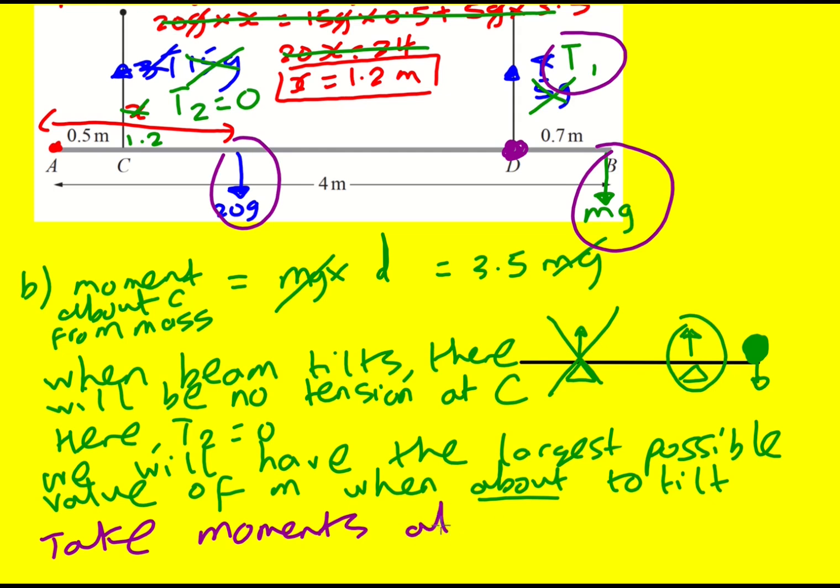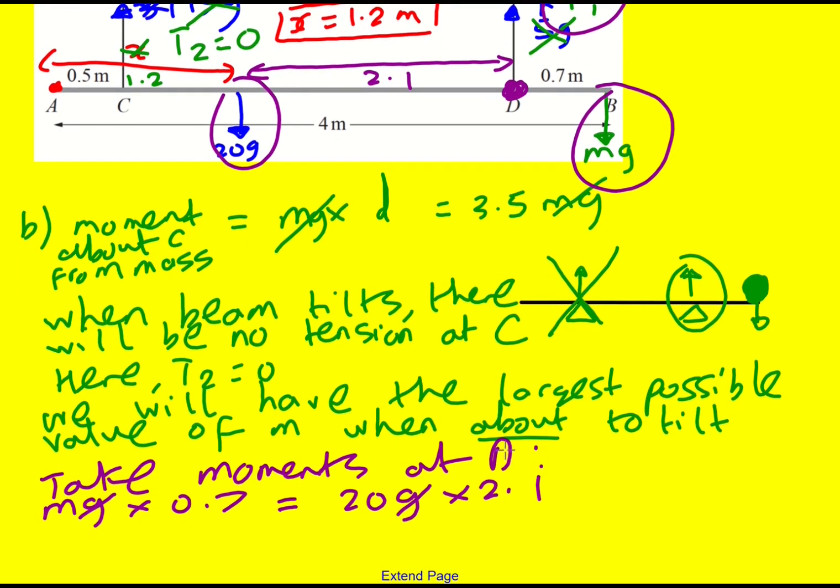Take moments at D, then it's going to be mg multiplied by 0.7 is going to equal 20g. So if that is 1.2 and that is 0.7, then I can add them up to give 1.9 and therefore this distance is going to be 2.1. So 20g times 2.1. Cancel out the g's. We're just going to get M is going to be 20 times 2.1 over 0.7. 2.1 divided by 0.7 is the same as 21 divided by 7, so it's 3. So it's 20 times 3, which gives 60 kilograms.